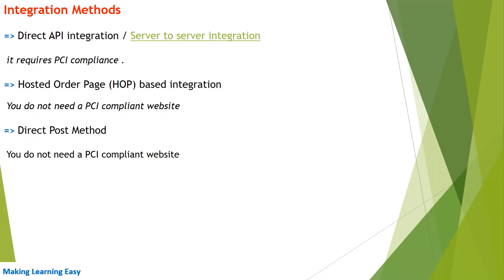The second is the hosted order page (HOP) based integration. With HOP integration, you do not need a PCI compliant website. In this integration, the application or website redirects the customer to a payment page hosted by the payment gateway, where the customer enters payment-related details like credit card number and CVV. That particular payment page is hosted by the payment gateway, not by the merchant's website.